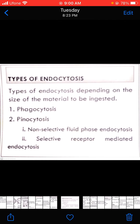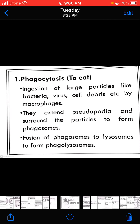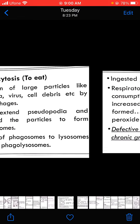Endocytosis is further subdivided into two types: phagocytosis and pinocytosis. The type depends on the size of the material to be ingested — if it is solid it is phagocytosis, and if it is liquid it is pinocytosis. Pinocytosis can be non-selective fluid-phase or selective receptor-mediated. Phagocytosis is the ingestion of large particles like bacteria, viruses, and cell debris by macrophages. They extend pseudopodia to surround the particles and form phagosomes, which then fuse with lysosomes to form phagolysosomes.